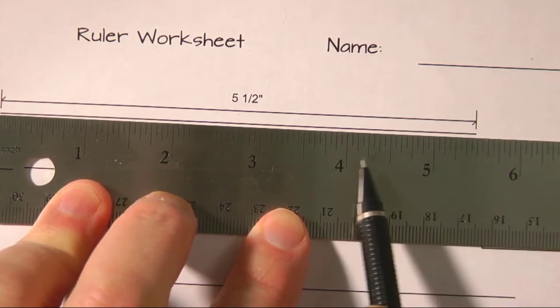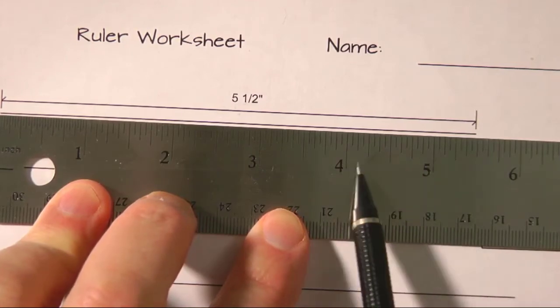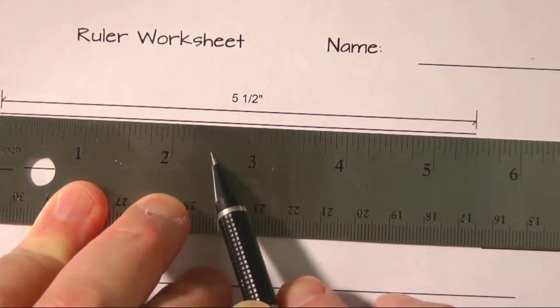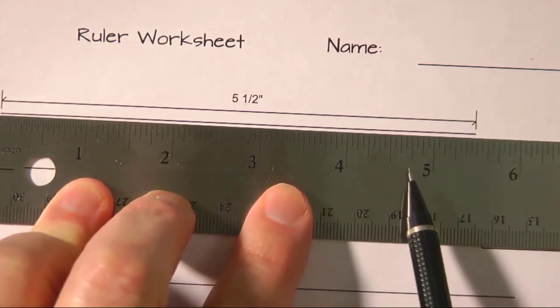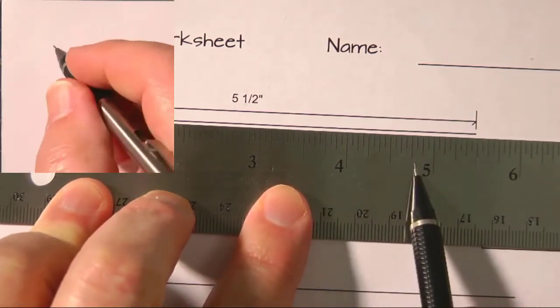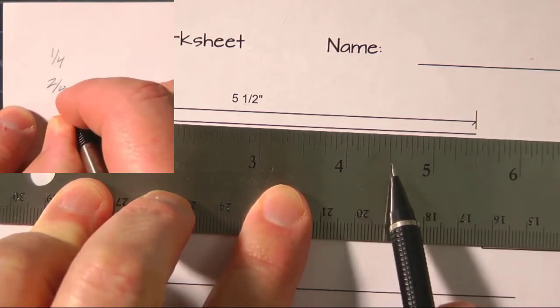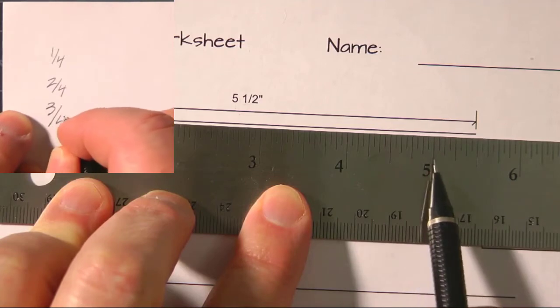So the inches are broken up into inches, and then we have a half inch there, and a half inch here, and a half inch over there. We also have quarter lines, there are four quarters to an inch, so we have one quarter, two quarters, three quarters, and four quarters.